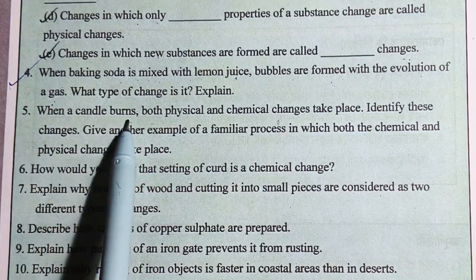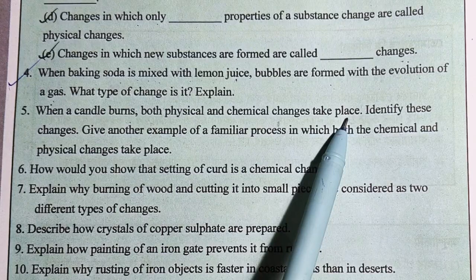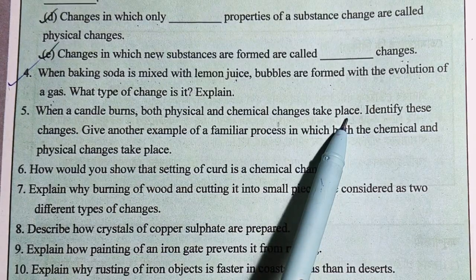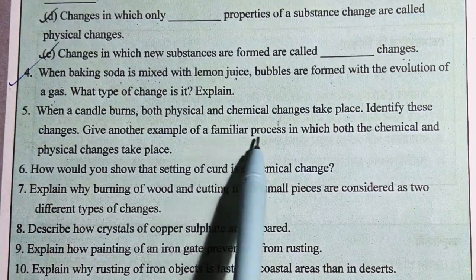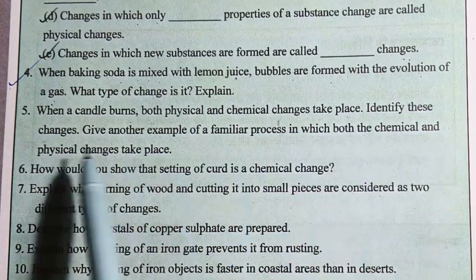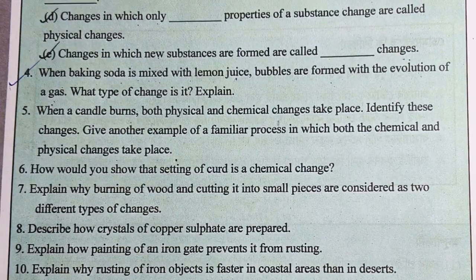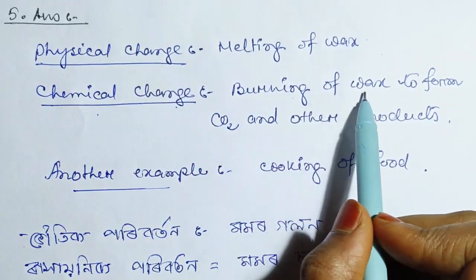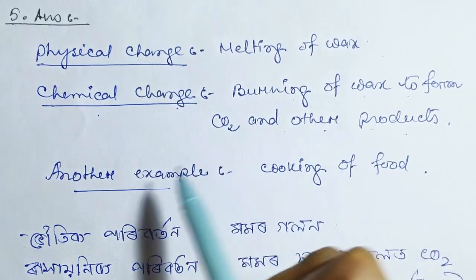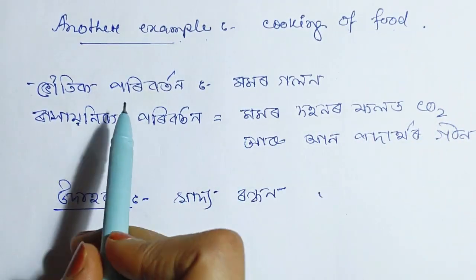Question number 5: When a candle burns, both physical and chemical changes take place. Identify these changes. Give another example of a familiar process in which both chemical and physical changes take place.